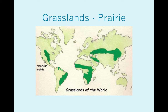Grasslands: the prairies. Of the three types of grasslands, the prairie is used the most for agricultural purposes — specifically for growing crops, not just grazing animals. Our American prairie is the reason for the 'flowing waves of grain' — the prairies are largely gone because that's where our grain crops are grown.